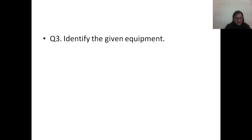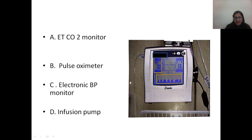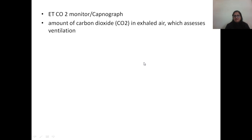Now we come on to question number 3: identify the given equipment. The correct answer is ETCO2 monitor. If you see the image clearly you can appreciate that it is mentioning ETCO2. The ETCO2 monitor is used for assessing the amount of carbon dioxide in exhaled air, which assesses ventilation.